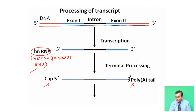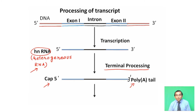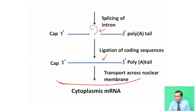After the formation of this heterogeneous RNA, capping and poly-A tailing occur — this is called terminal processing of the 5' end and 3' end. At the 5' end, a cap is added, and at the 3' end, a poly-A tail is added. After capping and tailing, the intron is spliced out — this is called splicing of the intron.